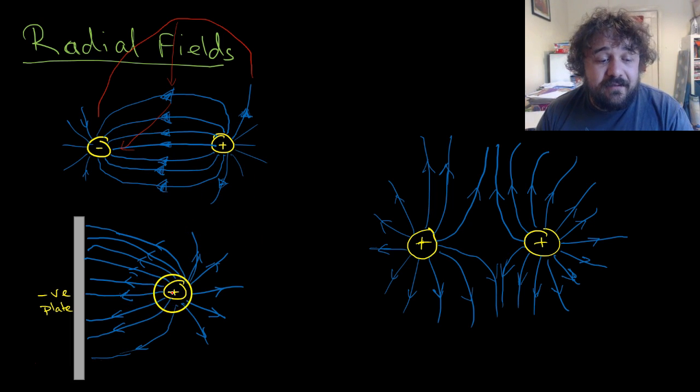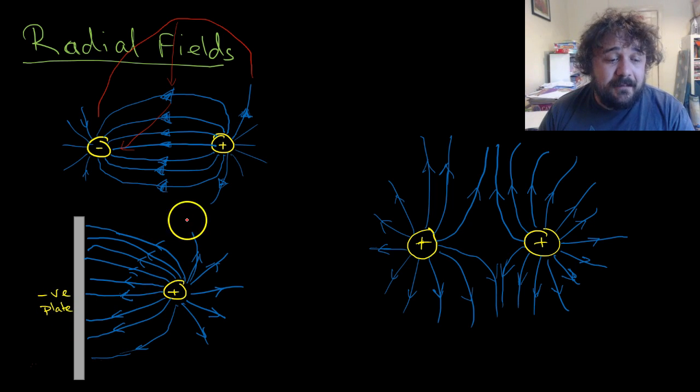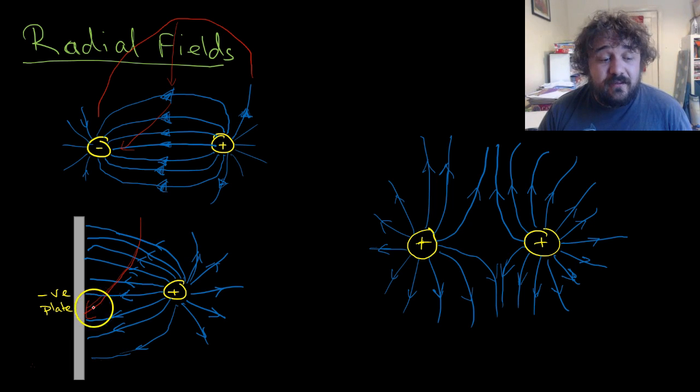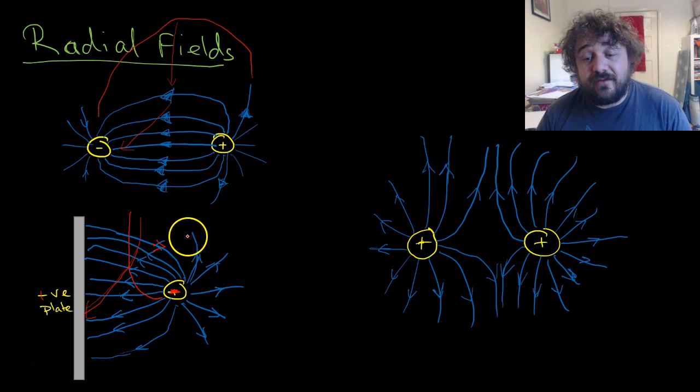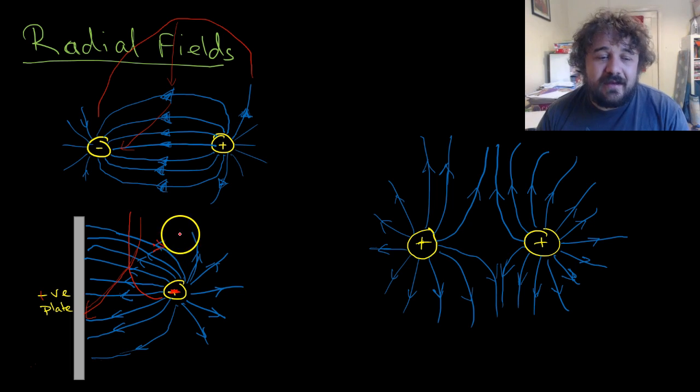Here we have a negative plate and a positive particle. If another positive charged particle came in, it would head towards the plate. If this was reversed, so if this was a positive plate and this was a negative particle, then as a positive particle came in, all the arrowheads were pointing in different directions. You need to put the arrowheads.